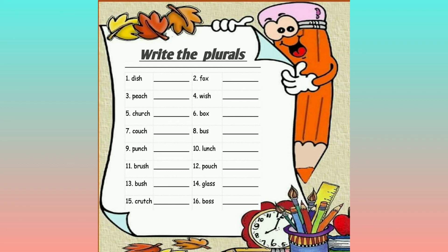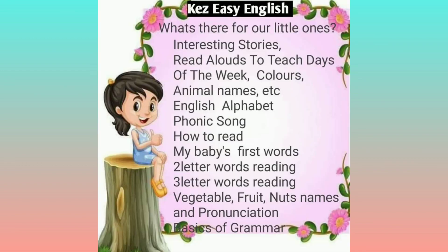We have added ES to all these words because all these words end with CH, SH, S, SS, and X. Hope the second rule of making singular into plurals is clear for you now.